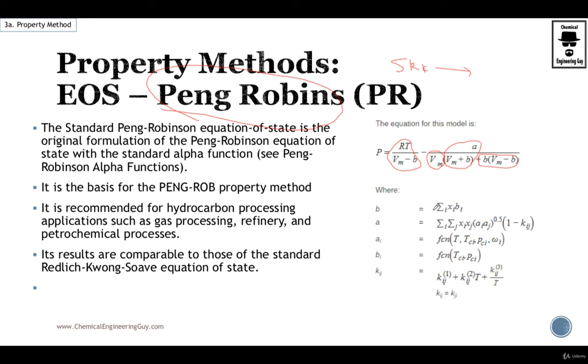Essentially the Peng-Robinson model will have these parameters. B is calculated by the composition of i and the value of Bi, which is obtained by a function of the critical temperature and pressure of this component per se.